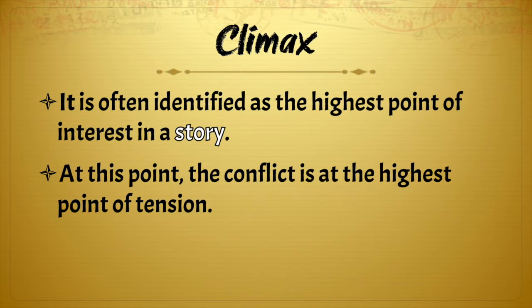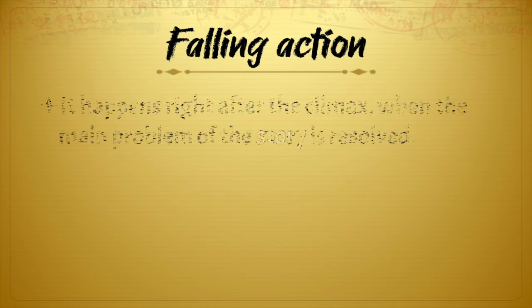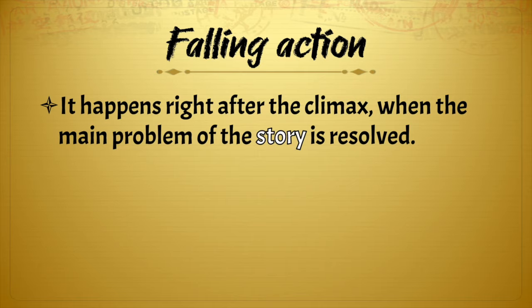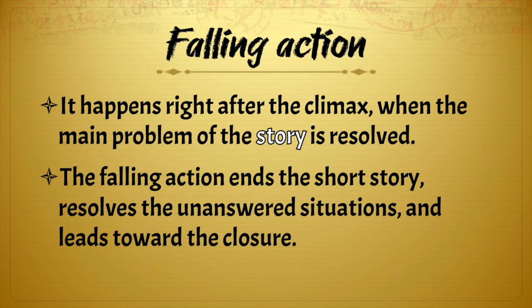The climax is often identified as the highest point of interest in a story — at this point, the conflict is at the highest level of tension. Then we have the falling action, which happens right after the climax, when the main problem of the story is resolved. The falling action resolves unanswered situations and leads toward closure.